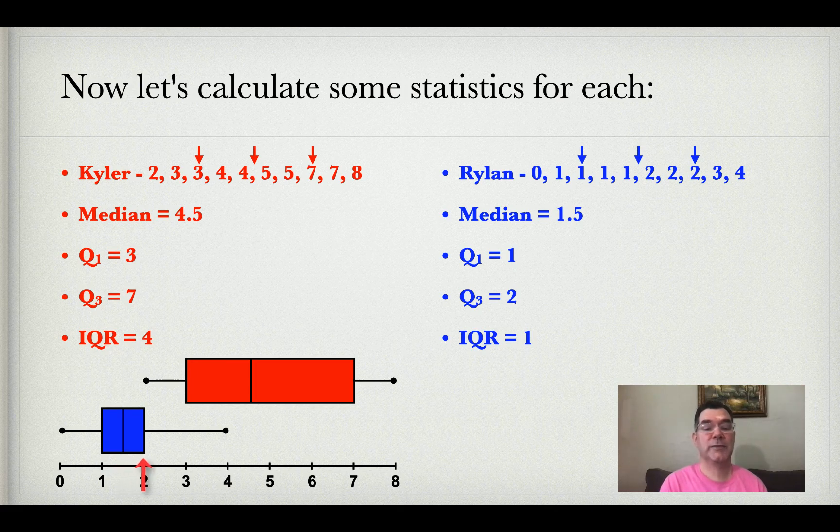The upper quartile of 2 is represented by the right edge of the box, and the maximum of 4 is represented by that dot on the right.